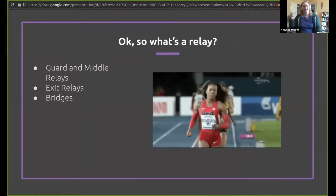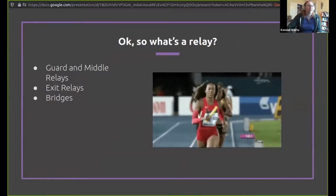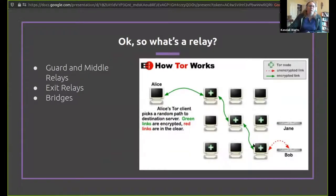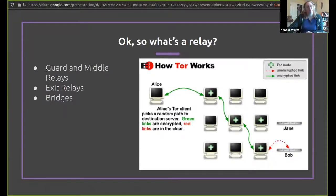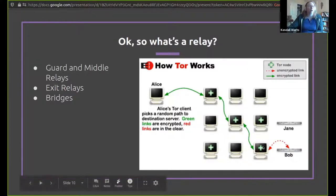So what's a relay? All of the computers in between are the relays. That's what I decided to build, because the more relays the Tor network has, the stronger it is — the more places you can bounce your signal, the more protected journalists and political activists are. There are three different types of relays: a guard and middle relay, an exit relay, and a bridge. Guard and middle relays are anything but an exit relay. When you set up the relay, you tell it whether or not you want to be an exit relay, because exit relays can be a bit of a pain.